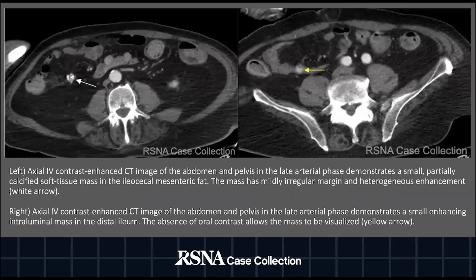On the left, an axial IV contrast-enhanced CT image of the abdomen and pelvis in the late arterial phase demonstrates a small partially calcified soft tissue mass in the ileocecal mesenteric fat, labeled by the white arrow. On the right image, there is an enhancing intraluminal mass in the distal ileum labeled by the yellow arrow. The absence of oral contrast allows this intraluminal mass to be visualized.